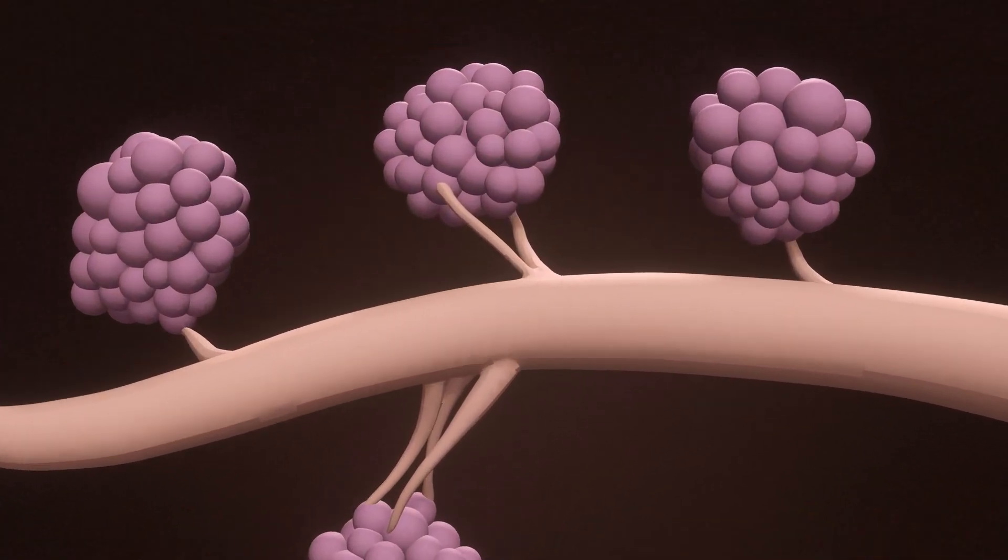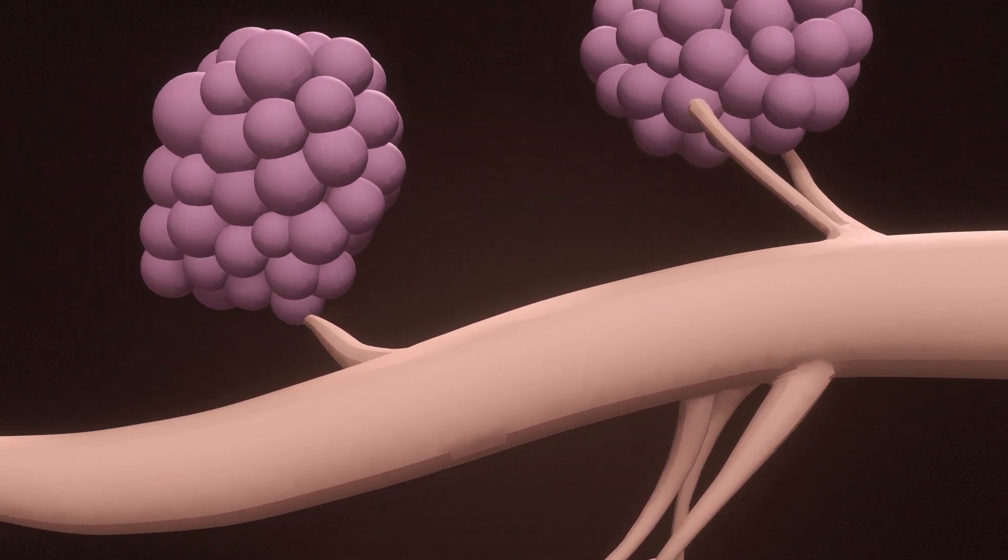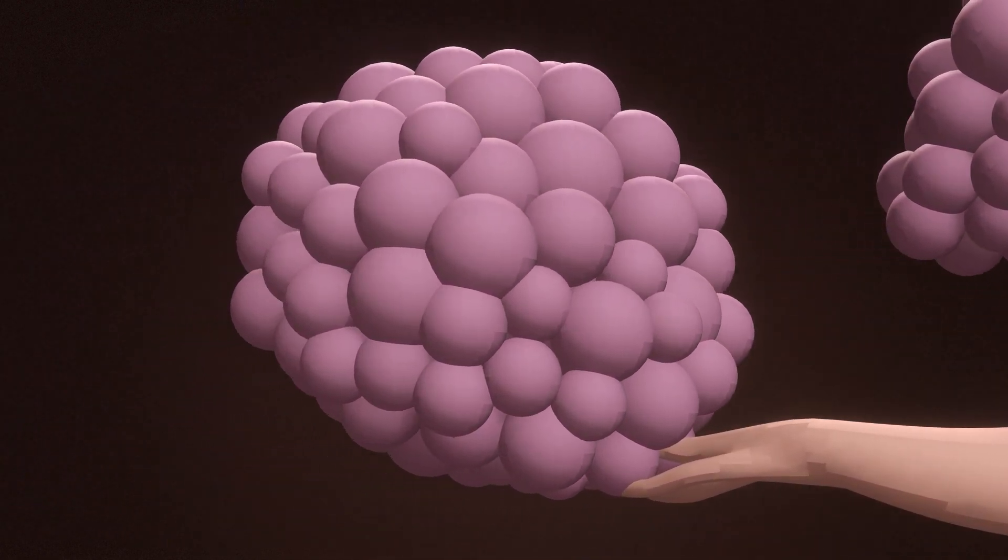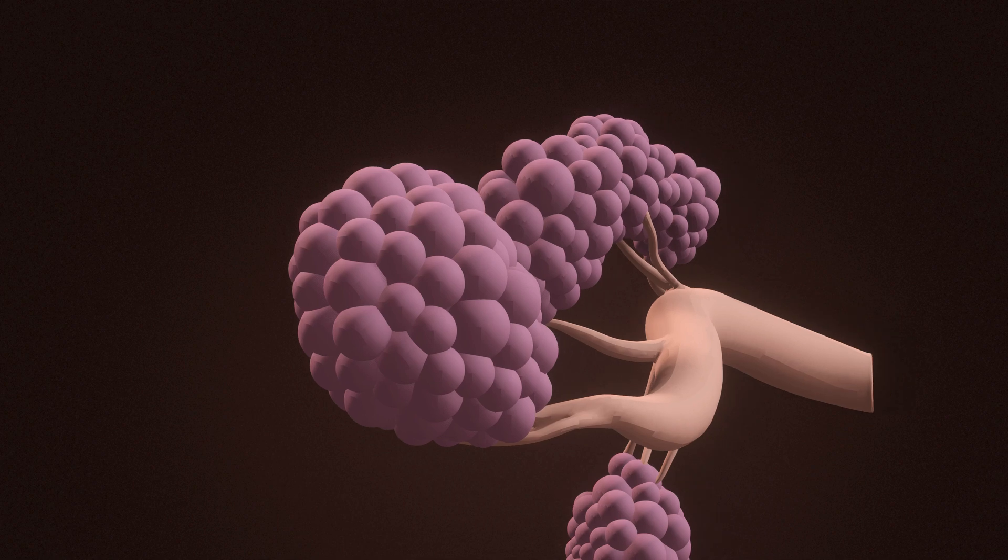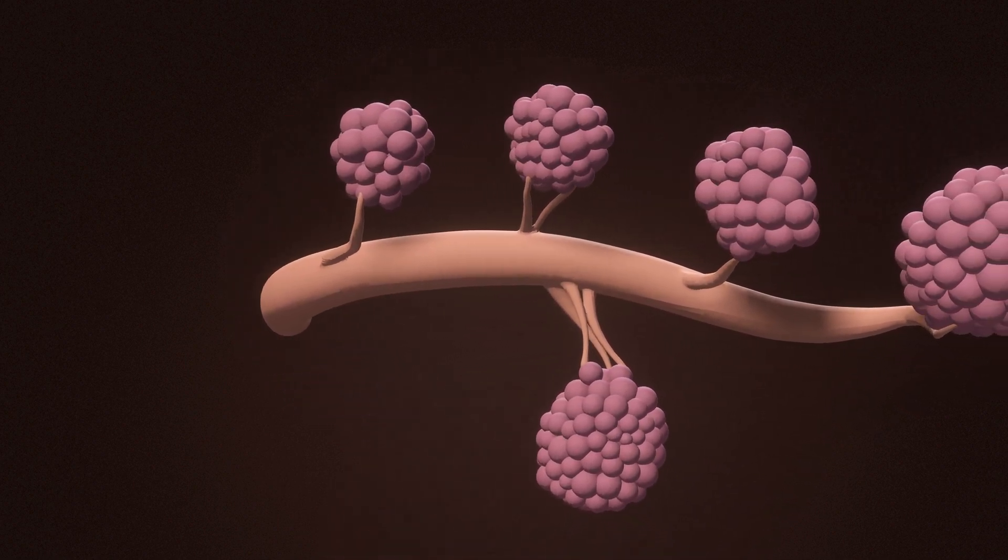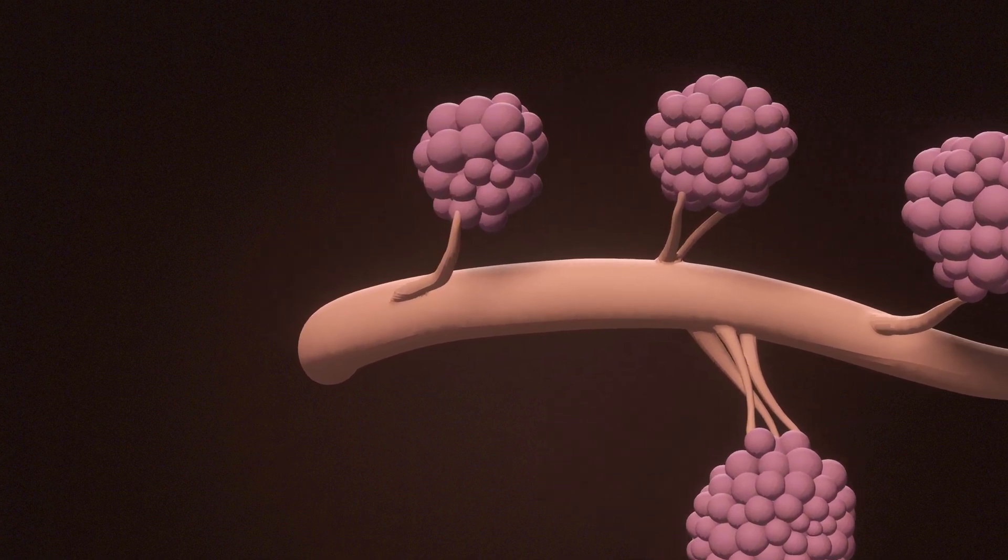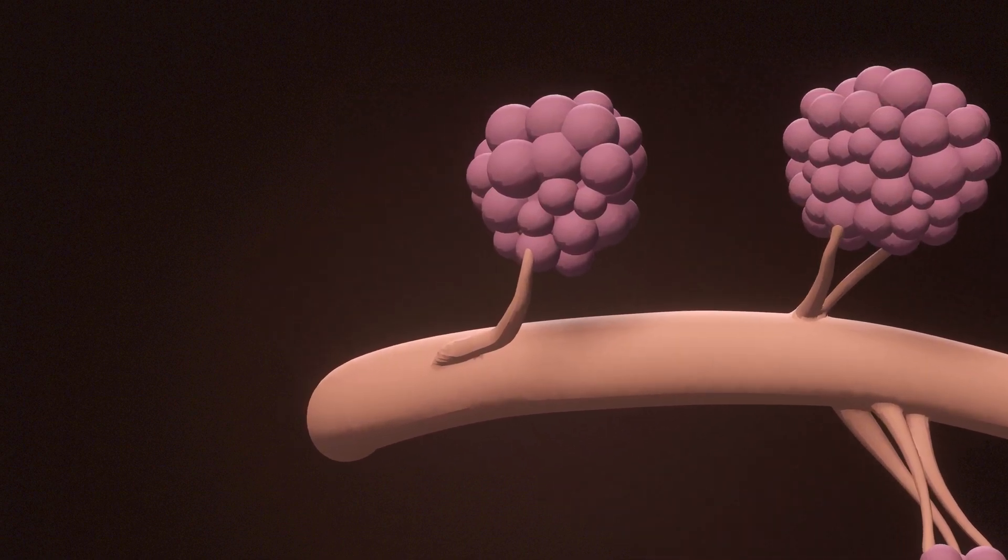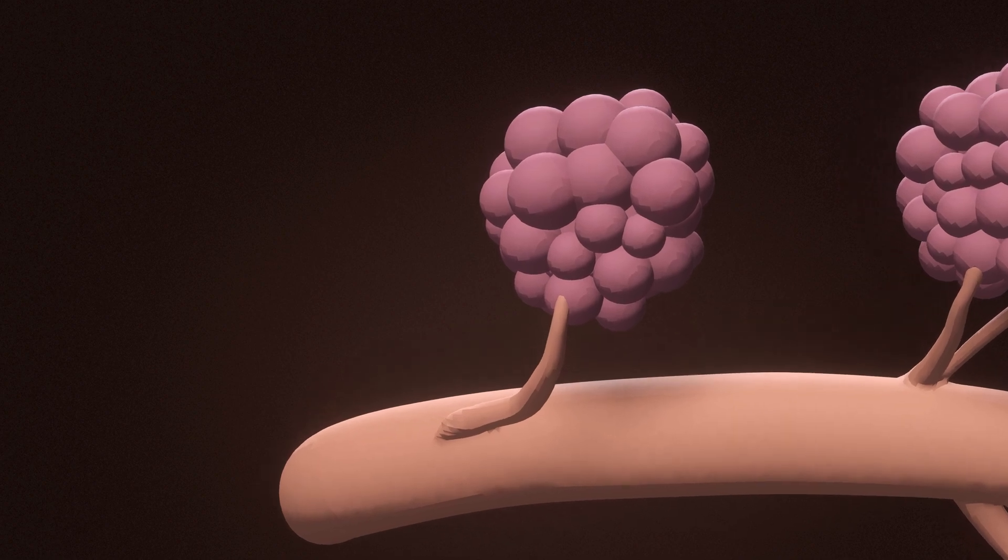The lactiferous ducts form a complex network within the breast. These ducts transport milk from the lobules to the nipple. As the milk flows, the ducts expand and branch out, illustrating their role in nourishment. Surrounding tissues provide structure and flexibility, ensuring smooth functionality during lactation.